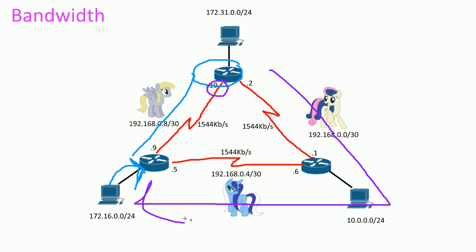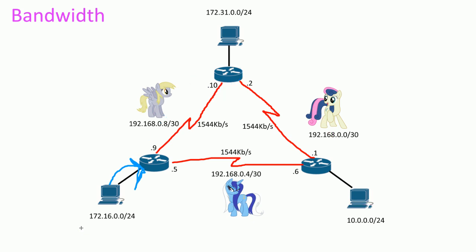So the reply comes back via that faster-looking route, which is completely weird. We finally reach the destination with the traceroute. This really messed up the network.